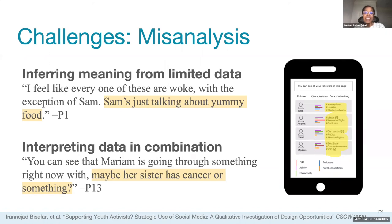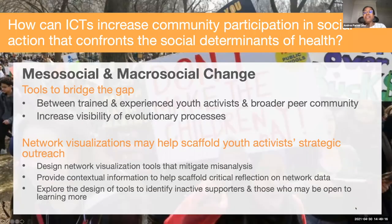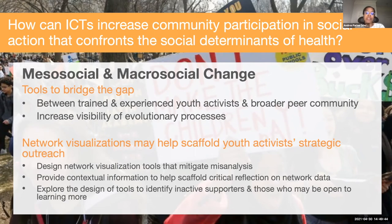Our findings show how hashtags can adopt different meanings based on how they are visually displayed on screen and how participants interpret these displays. To summarize, our findings point to several ways technologies can increase community participation in social action. Tools are needed that help bridge the gap between youth who are seasoned activists supported by community organizations and youth in the broader community. Our work suggests the value of technology that helps youth gain more insight into the social capital within their networks to support more strategic activism, while mitigating against misanalysis that can arise from the ways network information is visualized.